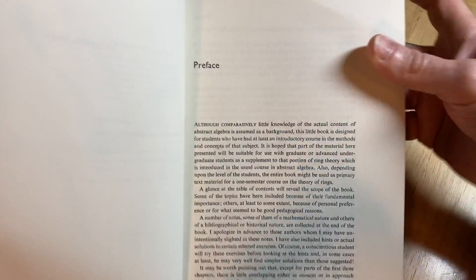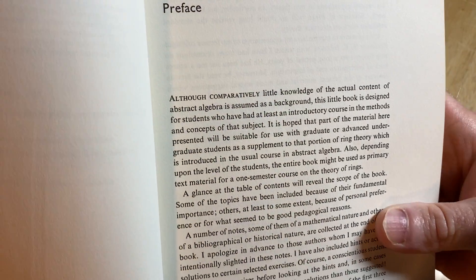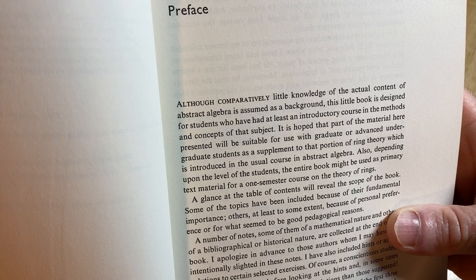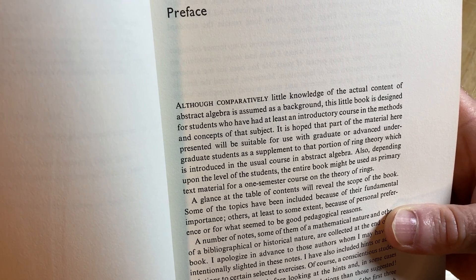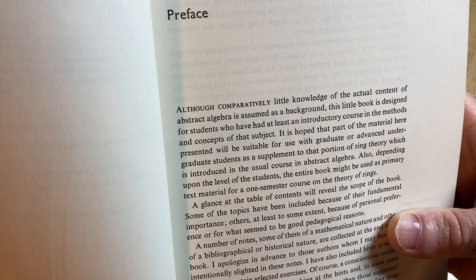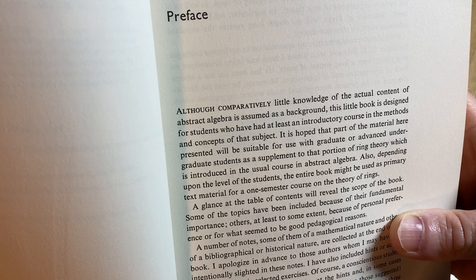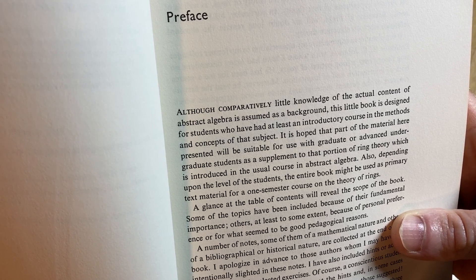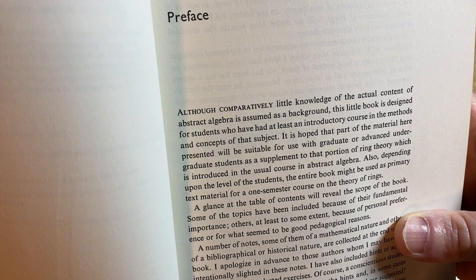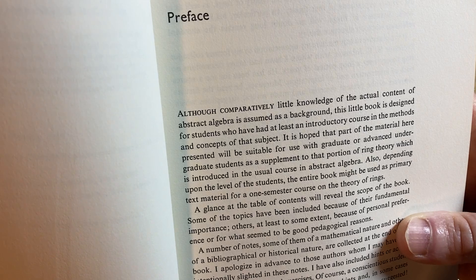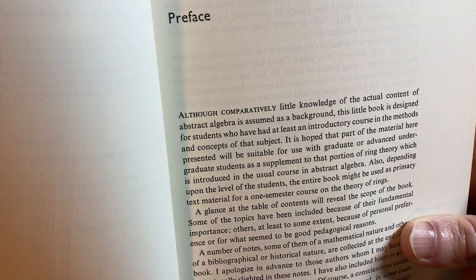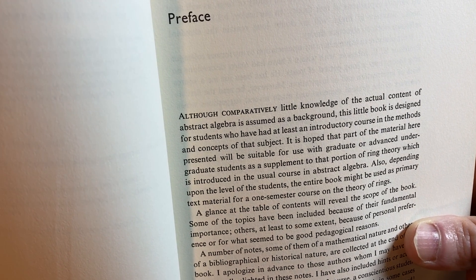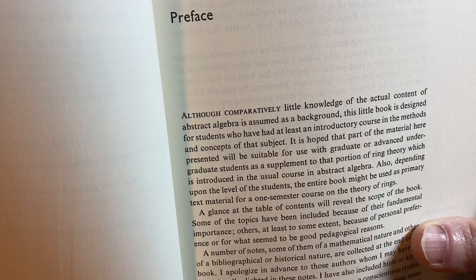So it says here, although comparatively little knowledge of the actual content of abstract algebra is assumed as background, this little book is designed for students who have had at least an introductory course in the methods and concepts of that subject. It is hoped that part of the material here presented will be suitable for use with graduate or advanced undergraduate students as a supplement to that portion of ring theory which is introduced in the usual course in abstract algebra.